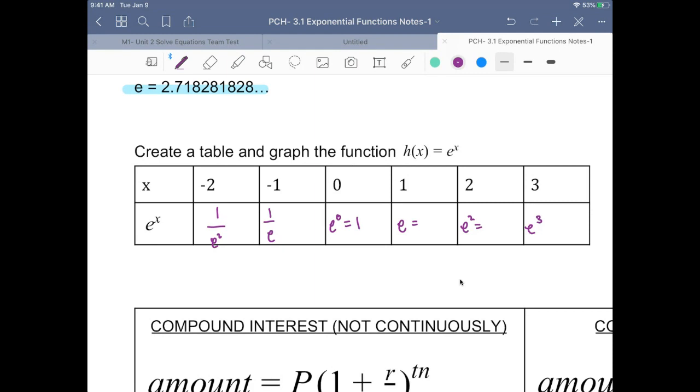I went ahead and typed these into my calculator. So I got 0.135, about 0.135. This one is about 0.368. E to the 0 is 1. E to the 1 is 2.718.